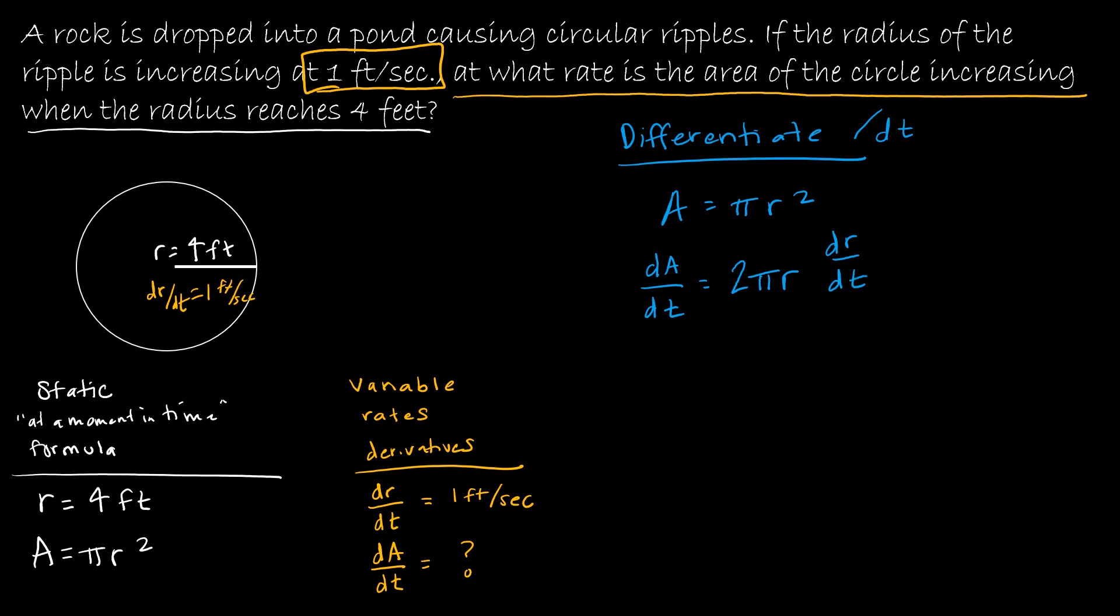From here I'm going to start plugging in values that I know. dA/dt, well that's what I'm trying to solve for. So this is going to stay dA/dt, and when I get to the end that's going to be my solution. I still have 2, I still have π. We know that r is 4 feet. That was one of our static values. And then dr/dt is also given to us. I don't want to box it just because that will be confusing. So that is 1 foot per second.